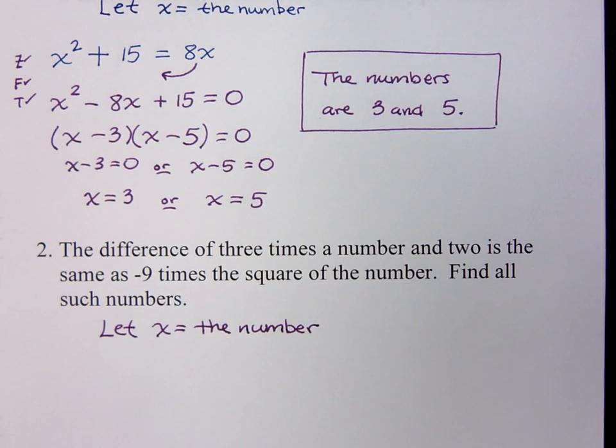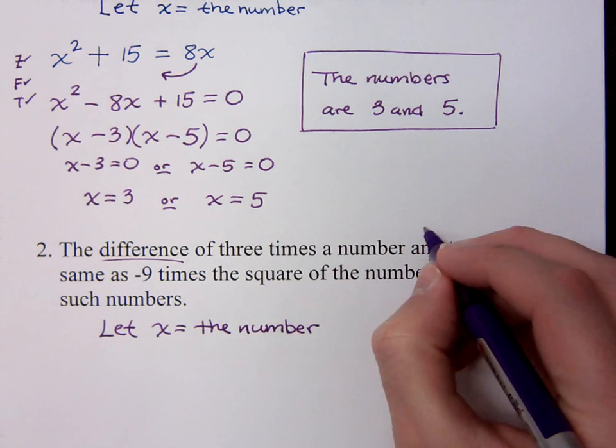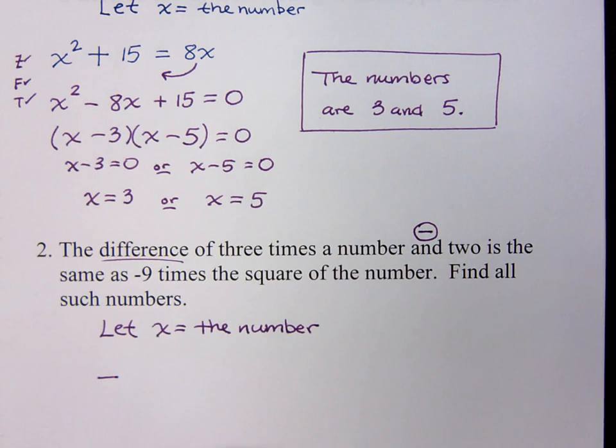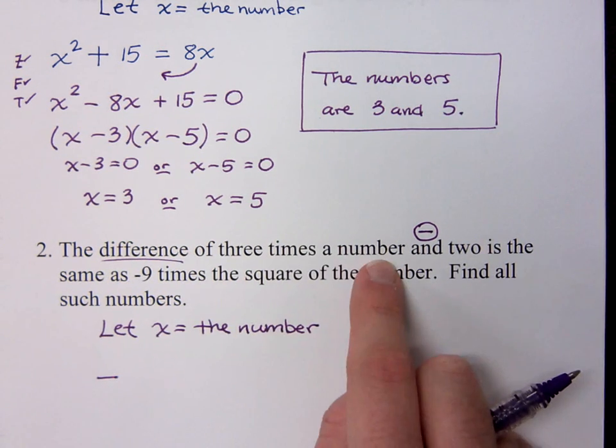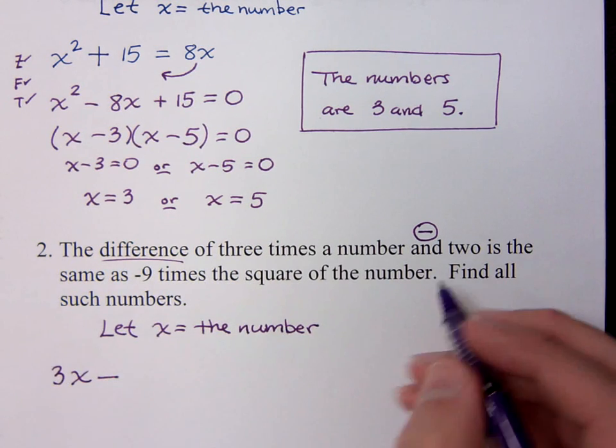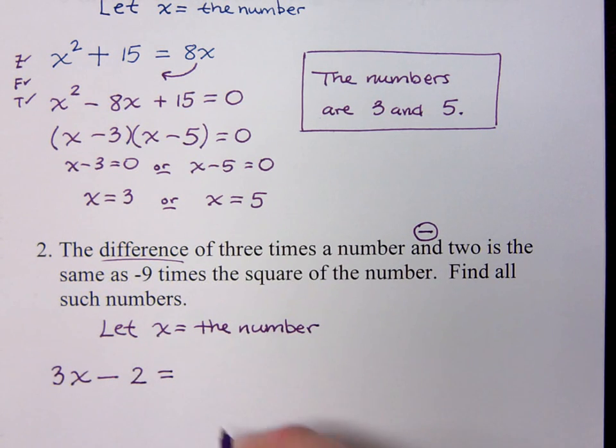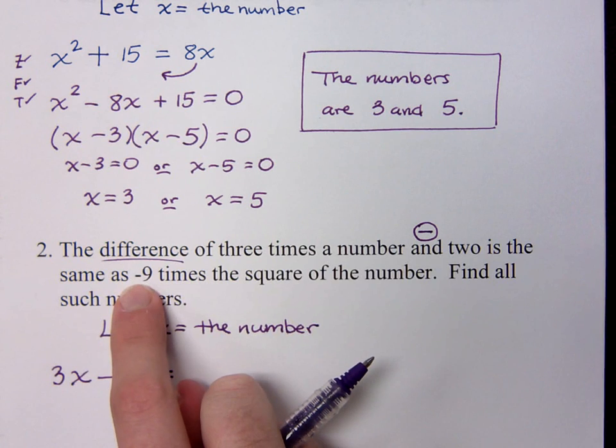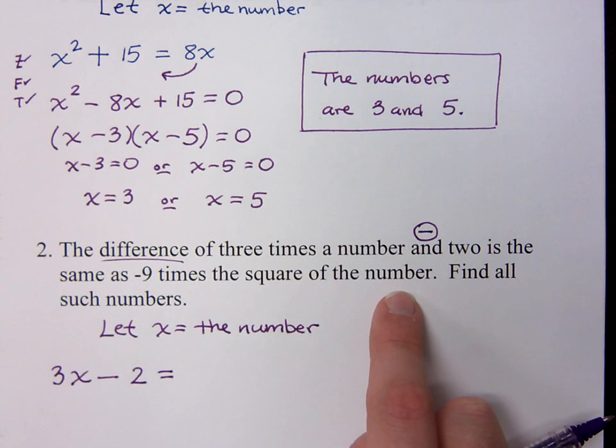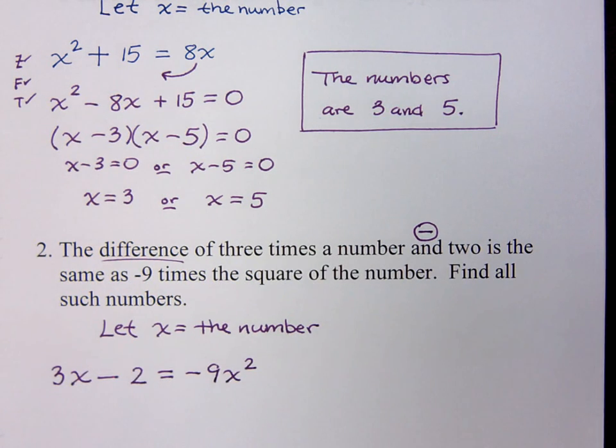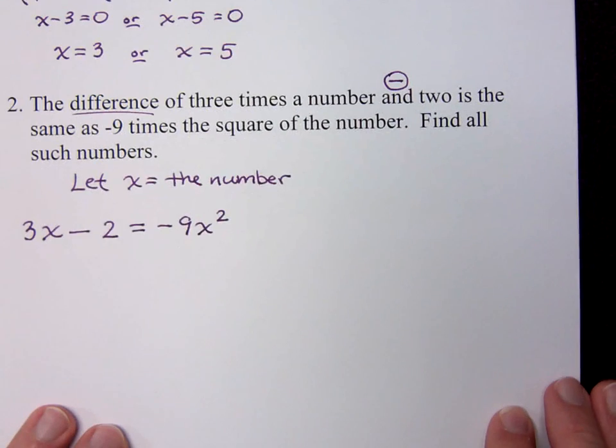Now, what's the first math word you see here when you're trying to write your equation? I see the word difference, and the word difference means what? Subtraction. So I find that word and. Here's my word 'and' right here. So that means I'm going to be dealing with subtraction. Okay, what are the two pieces? What comes before the minus? 3 times a number. So that's 3x. The other part of the difference is 2. And it says is the same as, so there's your equal sign. And it says negative 9 times the square of the number. How do I write that? We will write that as negative 9x squared.